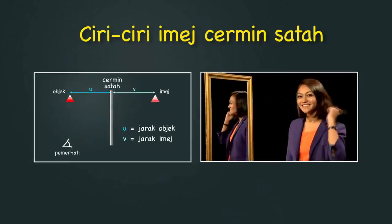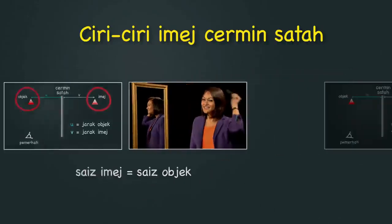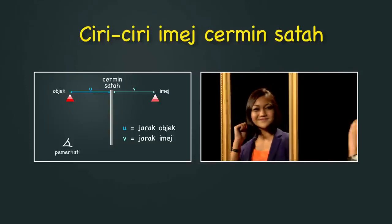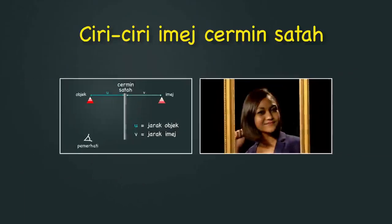Ini adalah ciri-ciri imej yang terhasil oleh cermin satah. Satu: Saiz imejnya sama dengan saiz objek. Dua: Jarak objek sama dengan jarak imej. Tiga: Agak-agak ketika sikat rambut depan cermin, adakah imej kita terbalik?